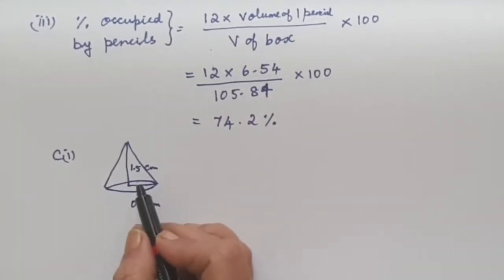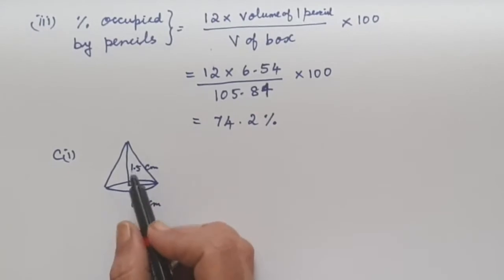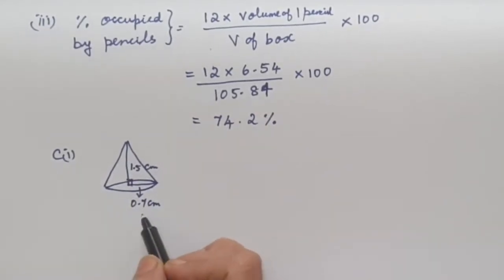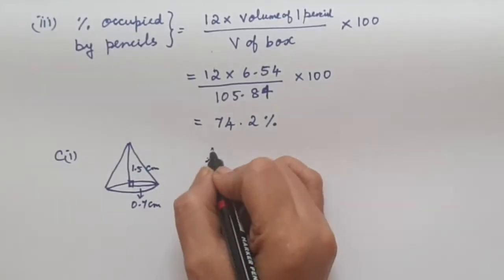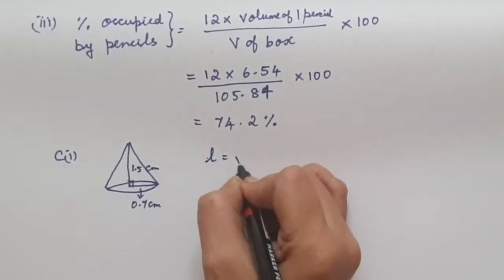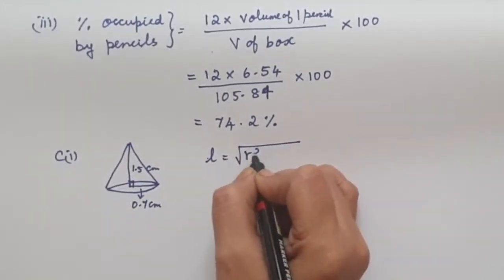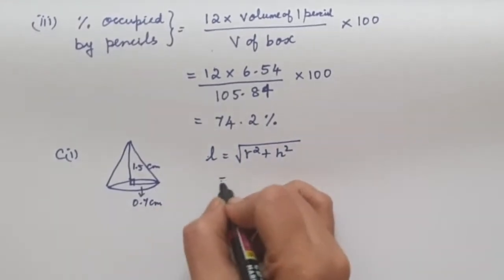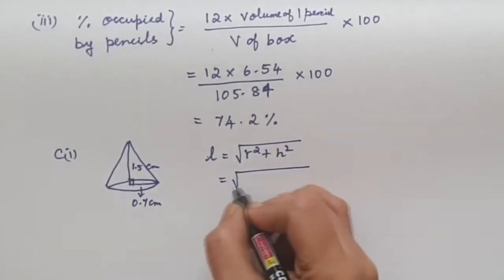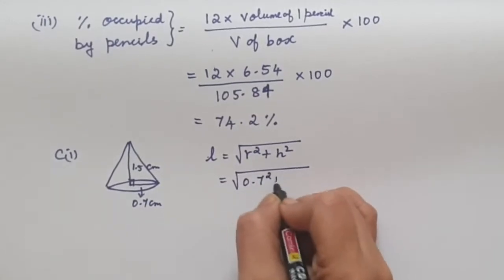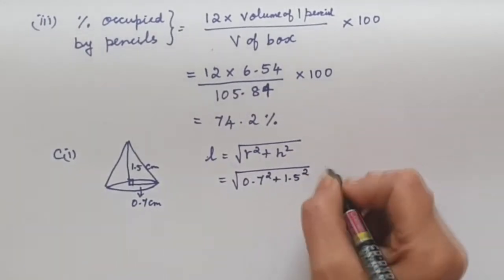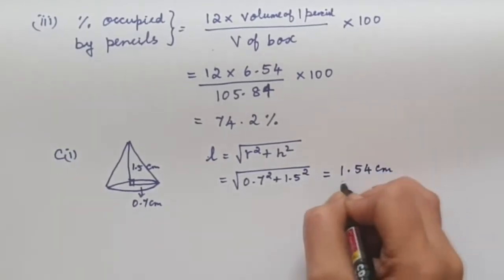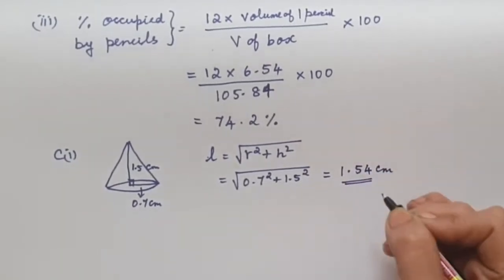In part C1, we are asked to find the slant height. The height of the cone is 1.5 and the radius is 0.35. Our slant height L equals √(R² + H²), which we get from the Pythagorean theorem. So L = √(0.35² + 1.5²), which gives us 1.54 cm. This is our slant height.